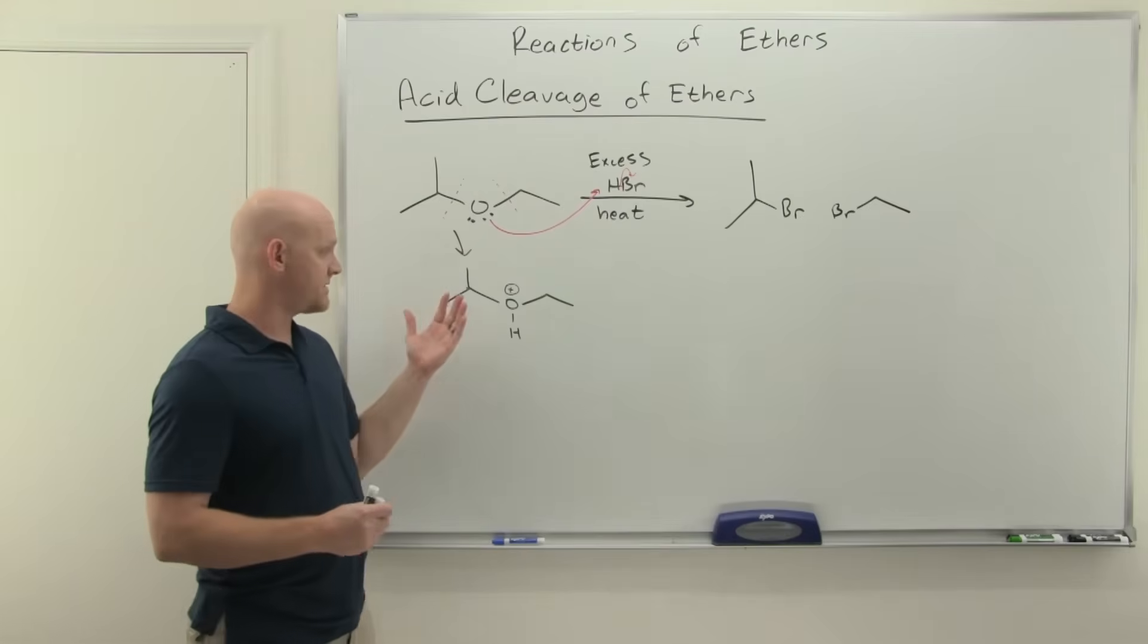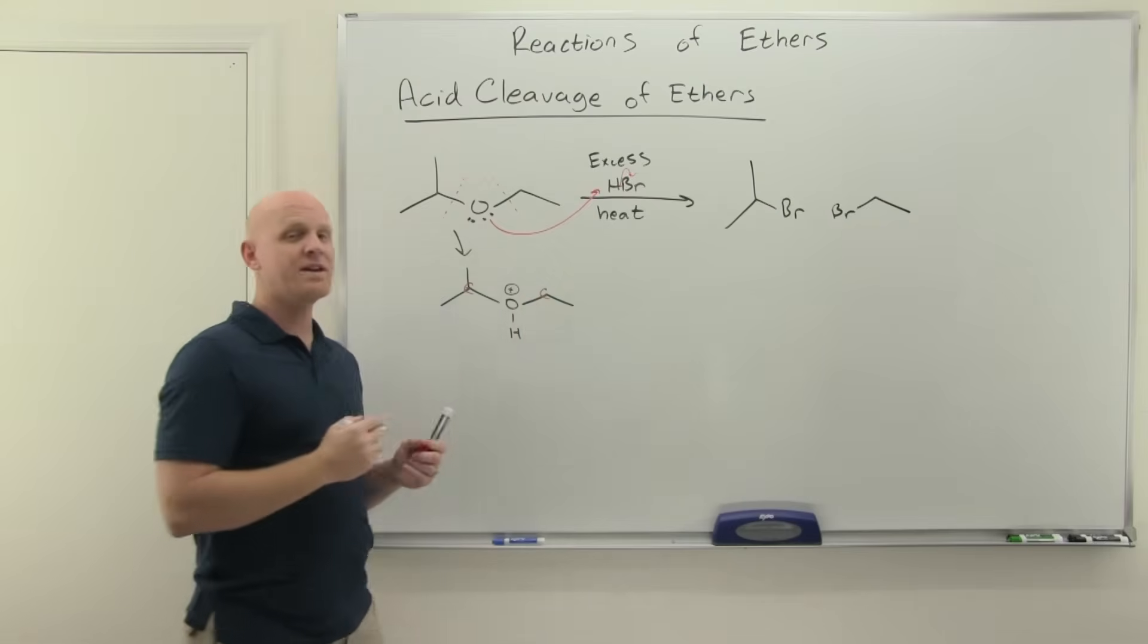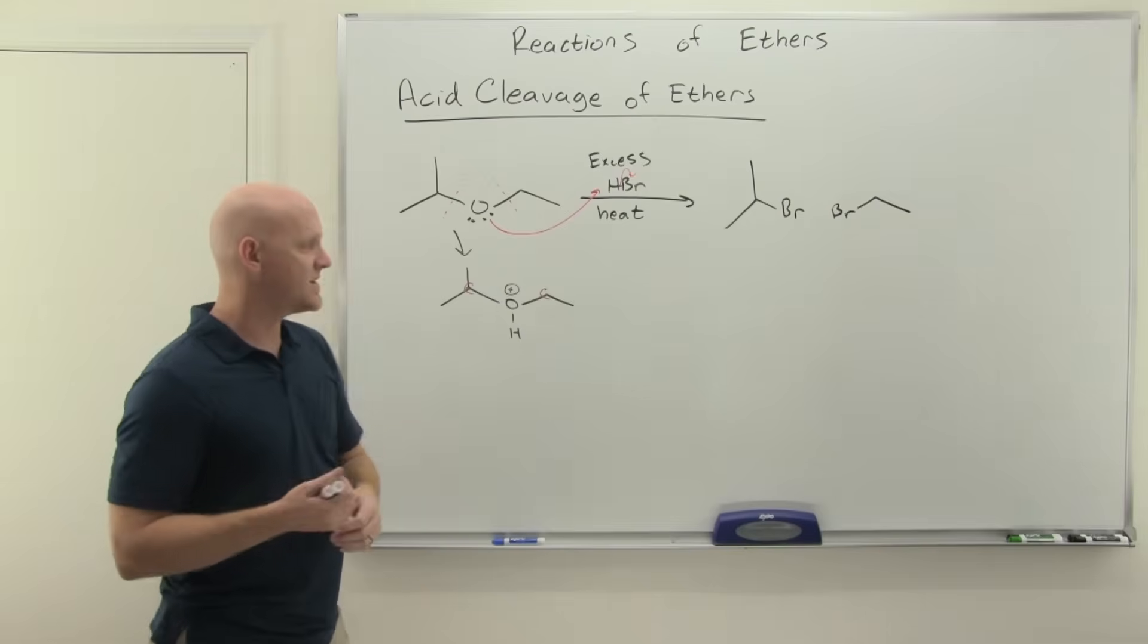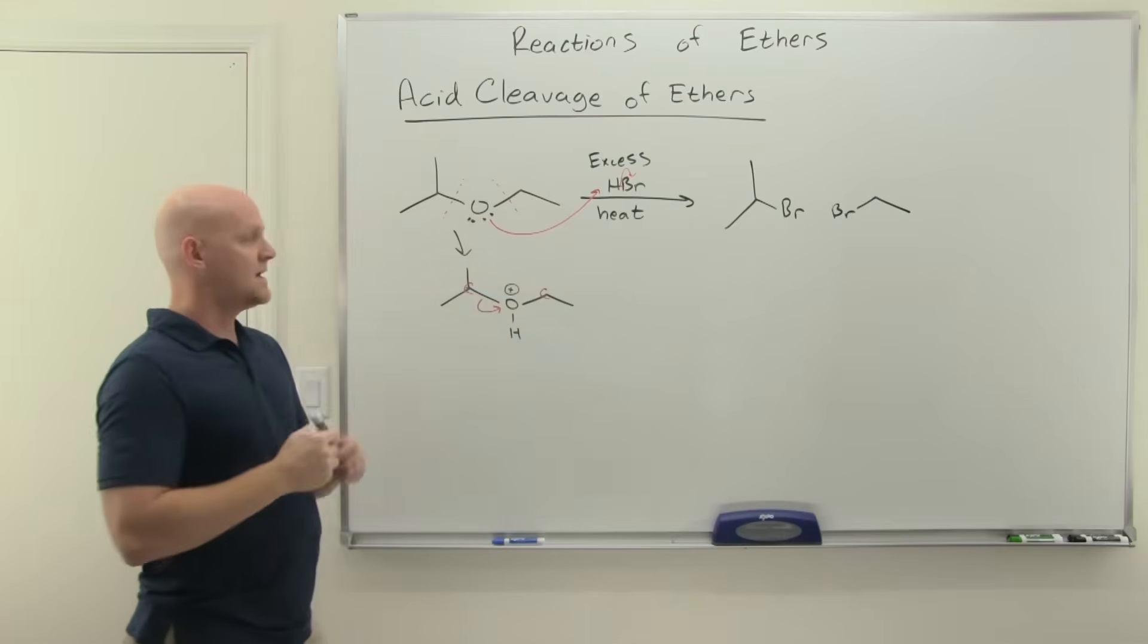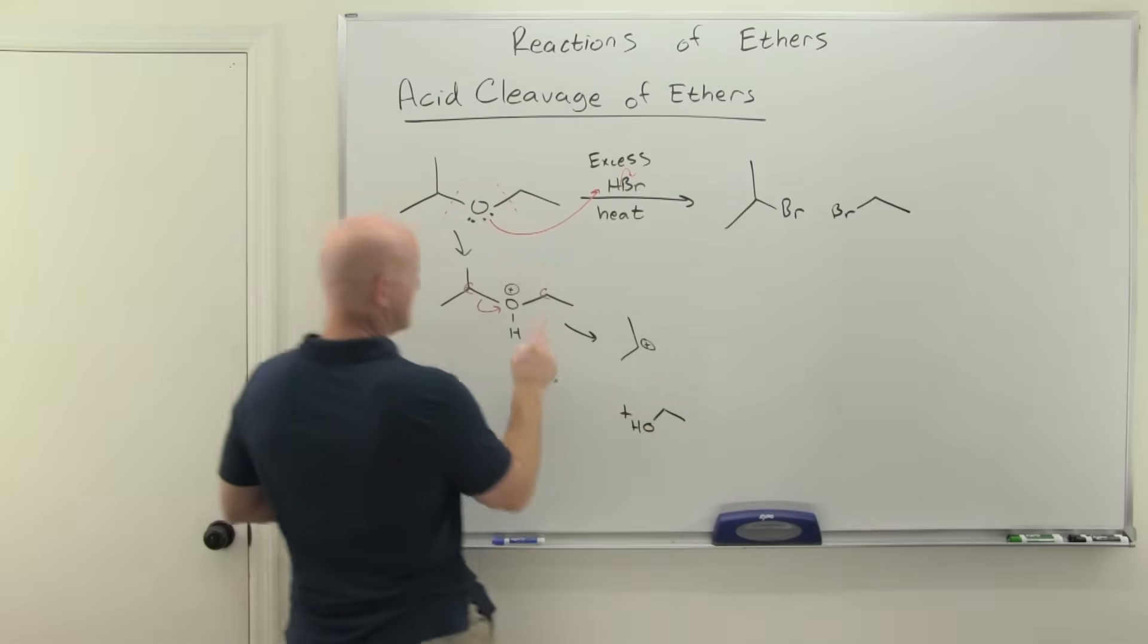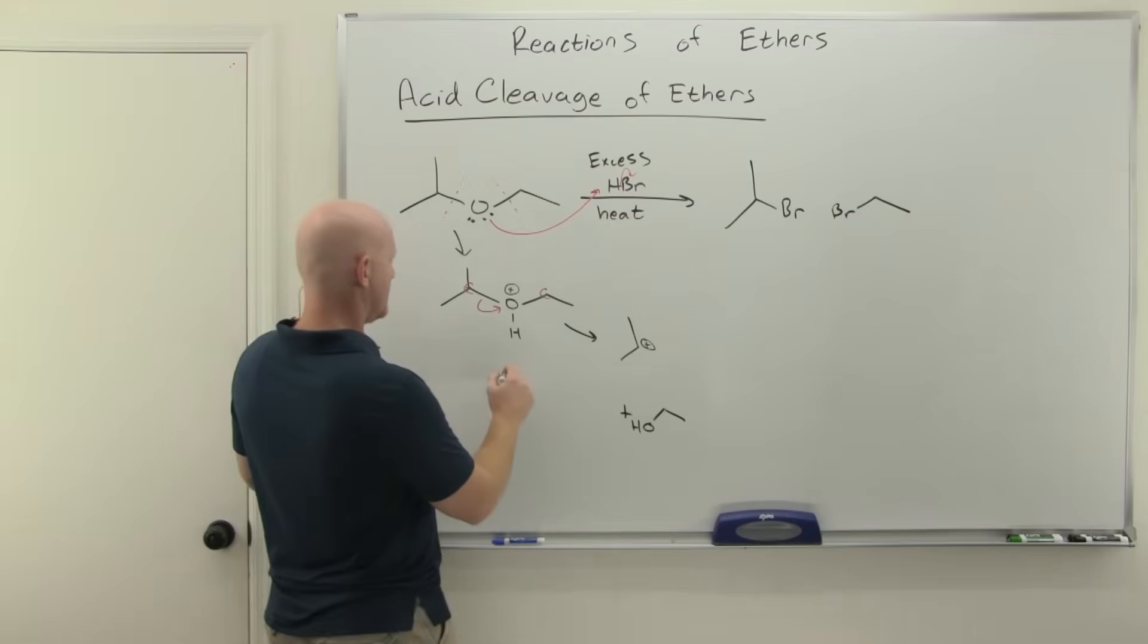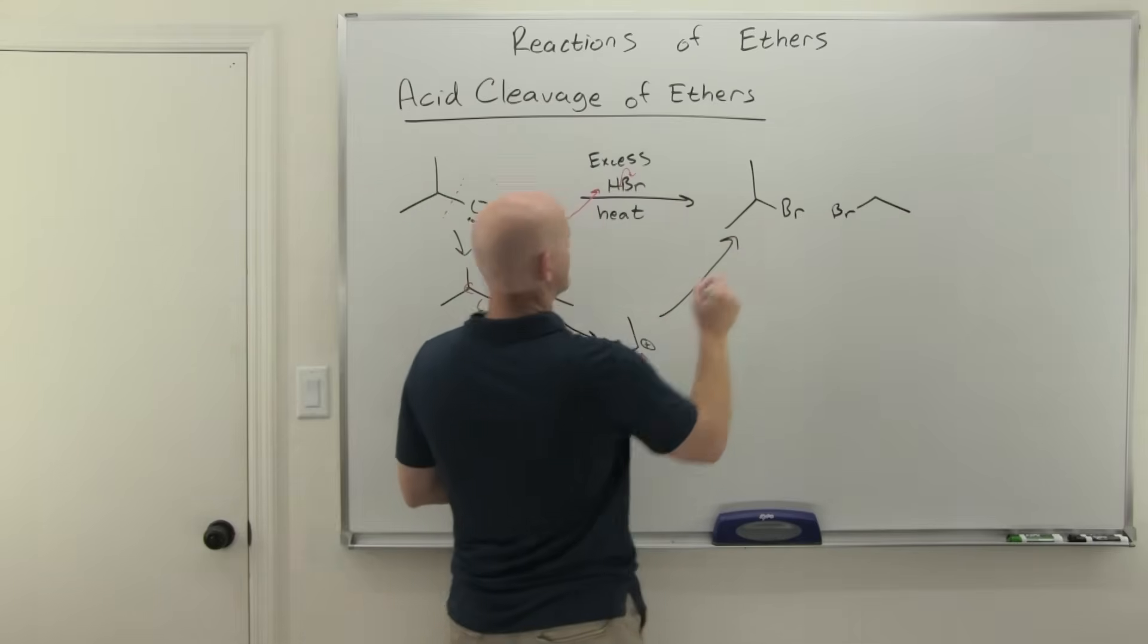The mechanism here prefers SN1 over SN2 when possible. If the adjacent carbon to the oxygen is tertiary or secondary, it proceeds by SN1. But if it's primary or methyl, it'll go by SN2 instead, just like we saw with alcohols in hydrohalic acids. In this case, with this side being secondary and this side being primary, it's most likely to leave from this side first. Being secondary, it'll go by SN1, forming a carbocation. The carbocation potentially could rearrange, but we don't have to worry about it in this case. We also formed a bromide ion that's going to attack our carbocation, giving us that product.